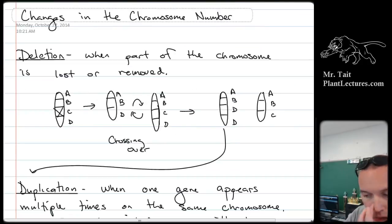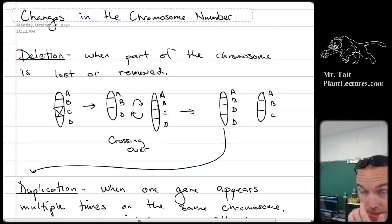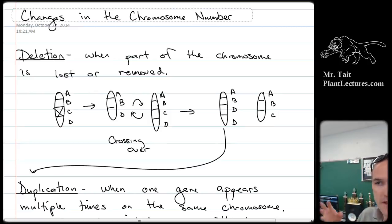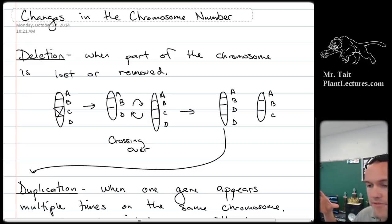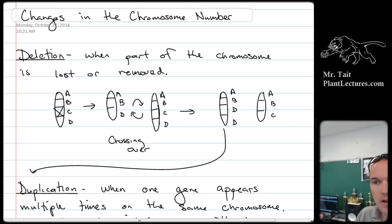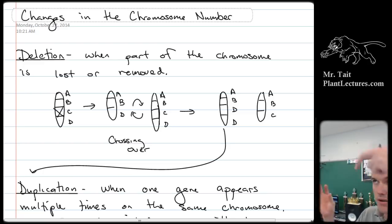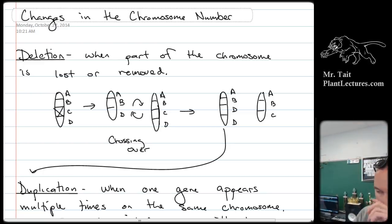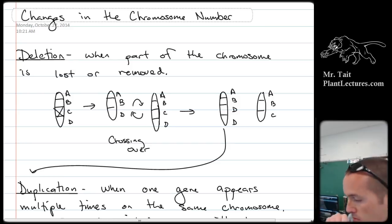Changes in chromosome number cause rapid speciation. The examples we gave were when a non-disjunction occurs that can cause polyploidy, or if two chromosomes actually fuse together, then you would have one less chromosome in the next generation than in the previous one.